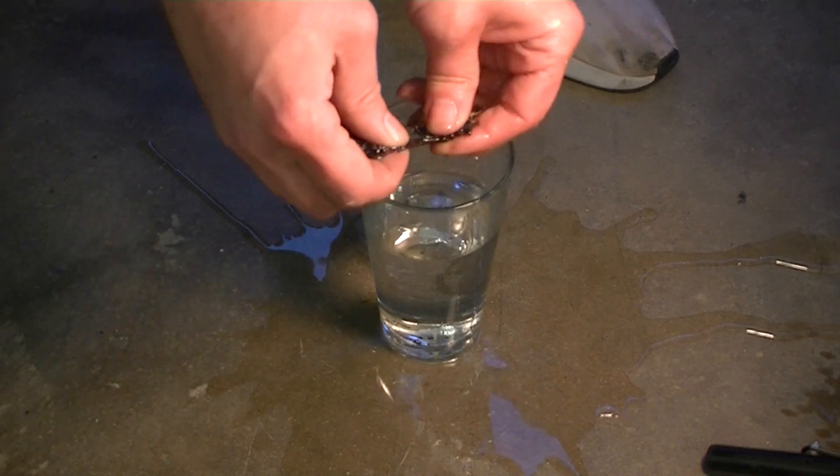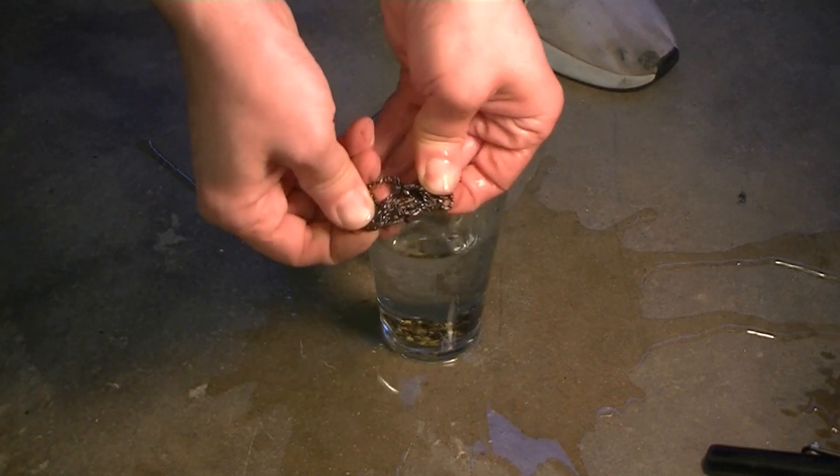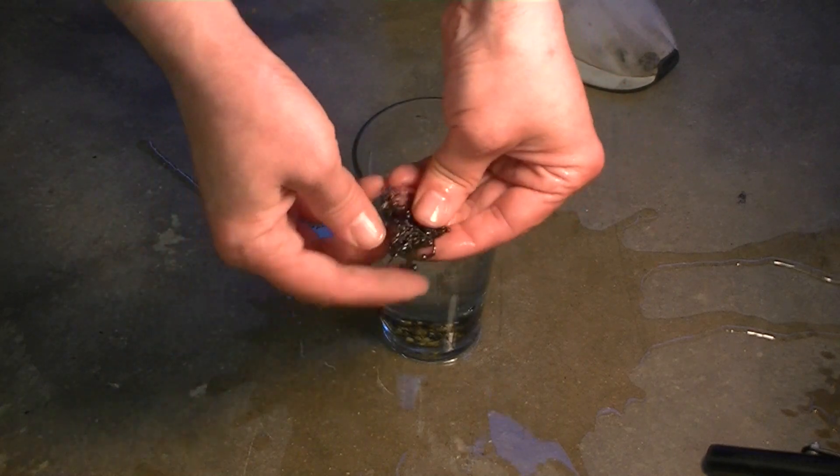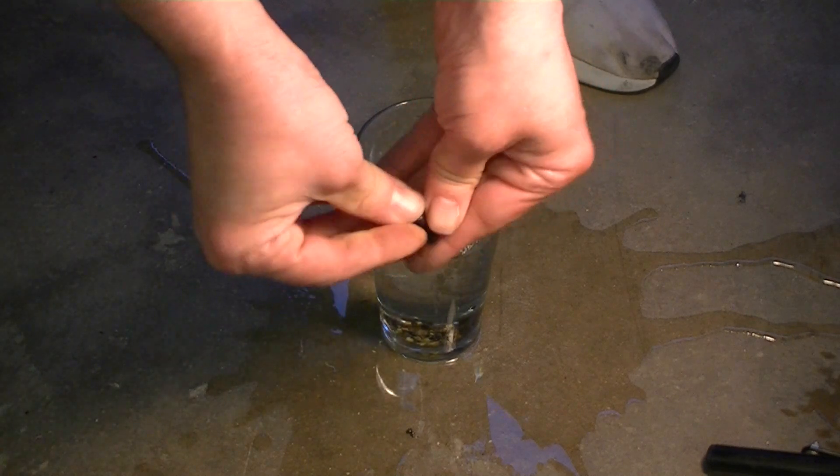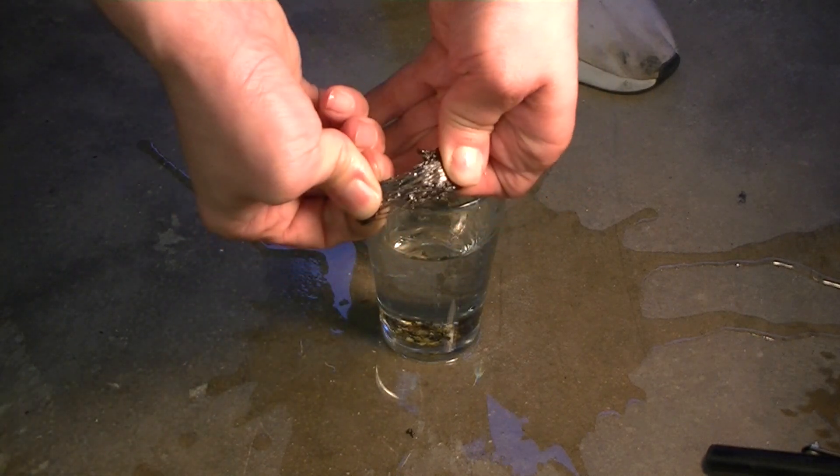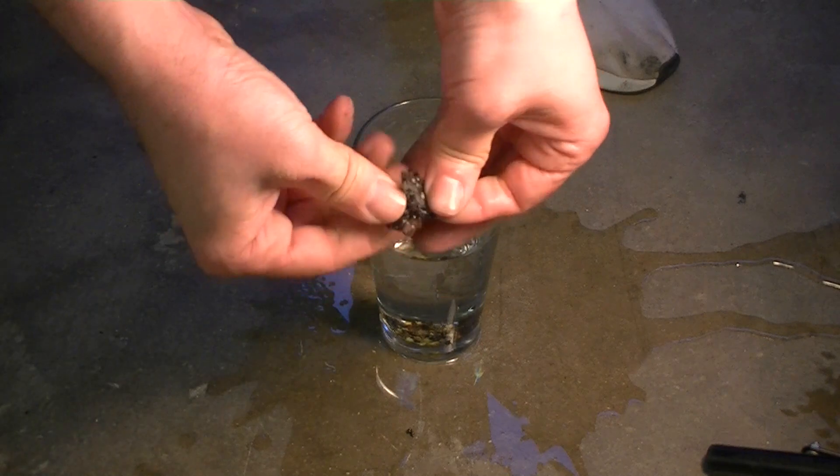When we remove the sulfur from the water and pull it between our fingers, you can see it has a chewing gum or rubber-like consistency. Although sulfur has almost zero solubility in water, I still wouldn't recommend chewing this.